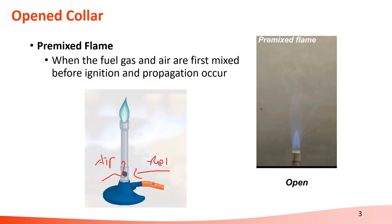the fuel gas is supplied through the pipe and goes up through the metal cylinder. When we open the collar, the air can move into the metal cylinder and mix with the fuel. In this way, the air and the fuel are mixed together before the ignition and propagation of the flame occurs on top of the metal cylinder. This type of flame is called the pre-mixed flame — it has a blue color and a very stable shape.